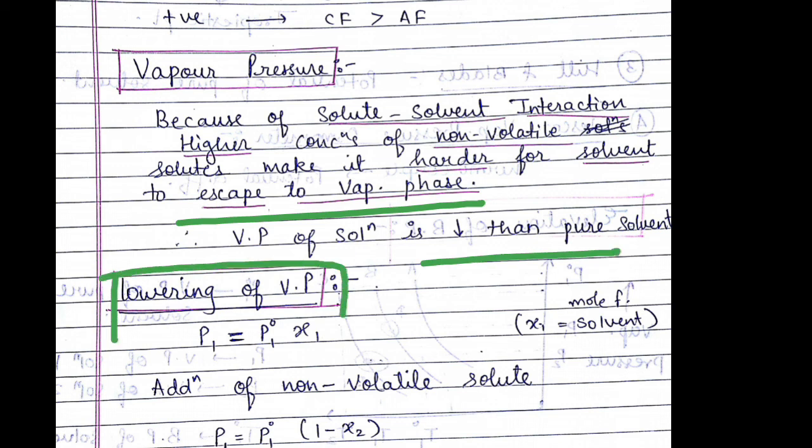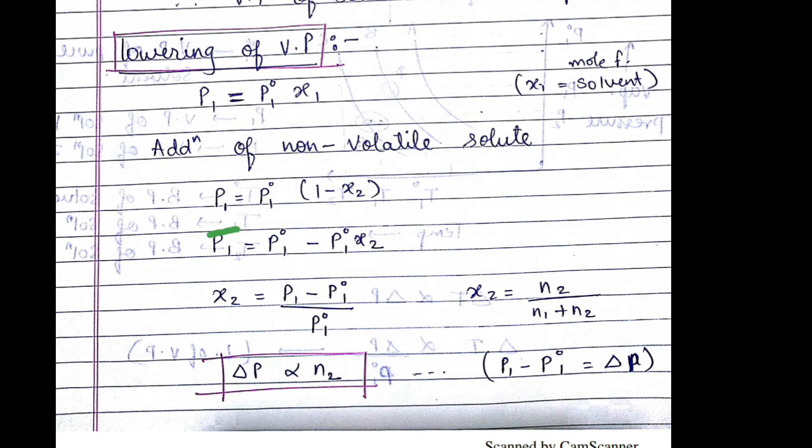Now we will see what is the lowering of vapor pressure. P is equal to P⁰ x₁, where P₁ is the partial pressure, P₁⁰ is the vapor pressure, and x is the mole fraction. This is the further derivation of lowering of vapor pressure.